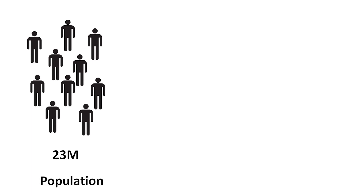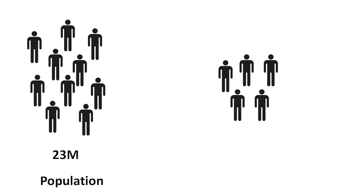Instead of going to each and every person and asking their income, we can take a sample — which is a subset of the population — of, let's say, 26,000 people, and ask their income. We can find out the average of that sample, and what you will find is that the average of this sample is very close to the average of the population.